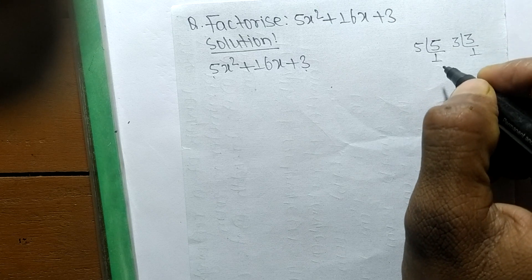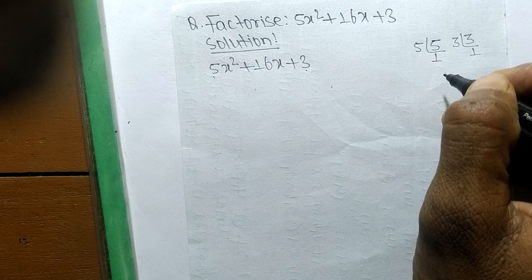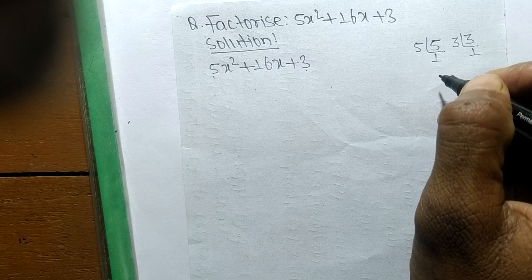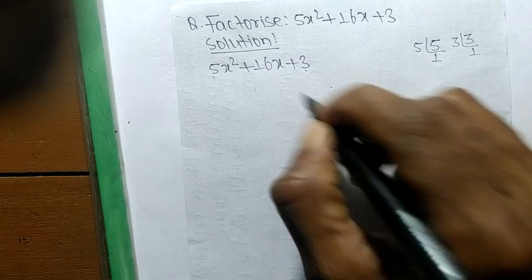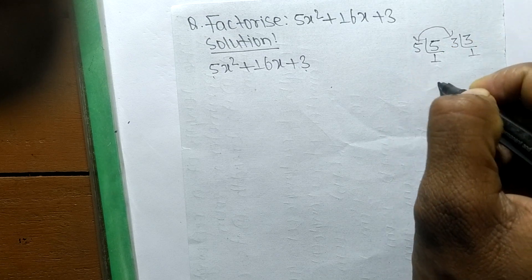By multiplying within these numbers, we have to find such a number that by adding up we get the middle number. When you multiply these two numbers, 5 × 3 = 15, and 1 × 1 = 1.